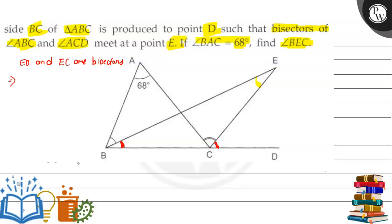So we can write first of all angle EBC will be half of angle ABC. Similarly, we can write angle ECD will be half of angle ACD. Since these are both bisectors, they divide these angles into equal parts. So we've denoted this as one and this as two.